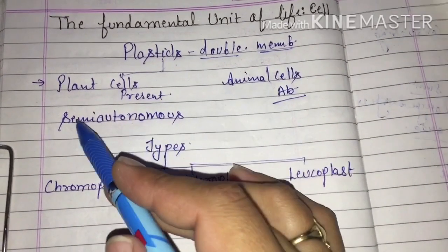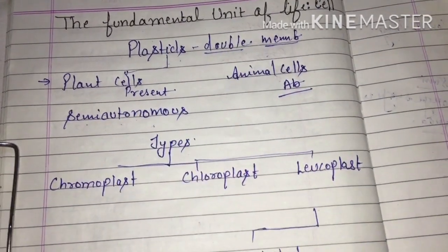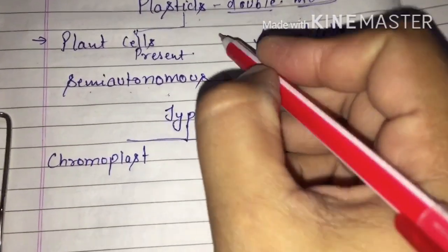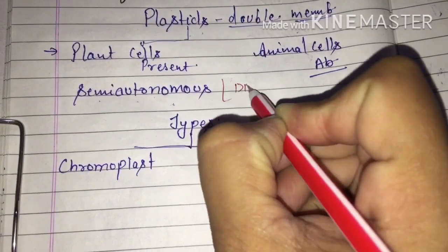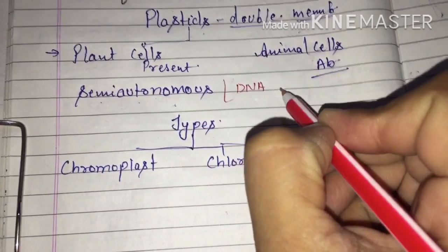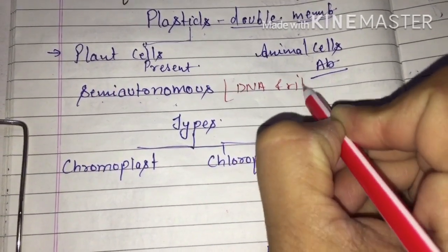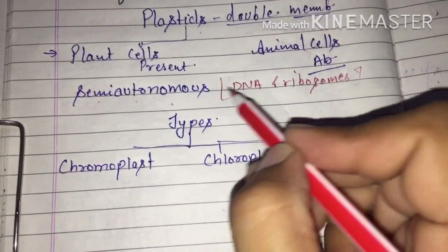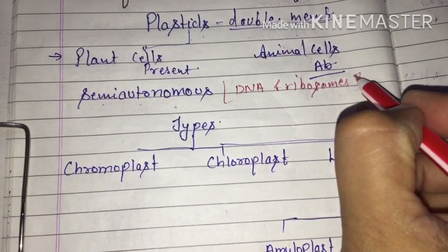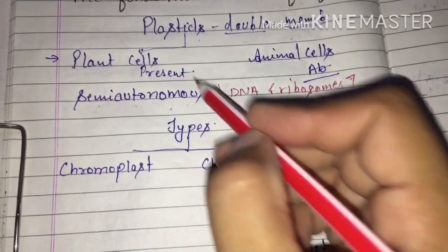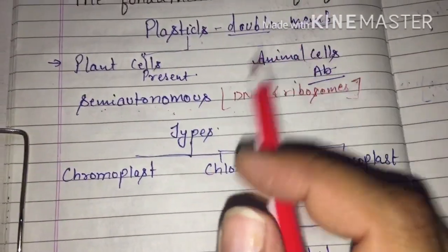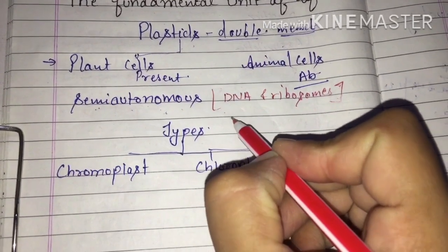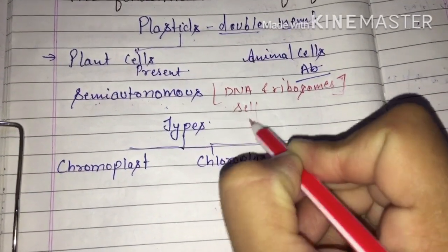Talking about a special property: like mitochondria, plastids are also semi-autonomous. Semi-autonomous means that they have their own DNA and their own ribosomes. Due to the presence of their own DNA and own ribosomes, plastids are semi-autonomous. And these are also self-replicating like mitochondria.